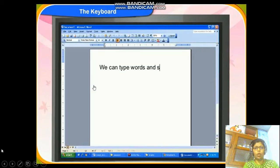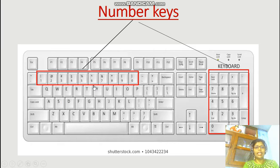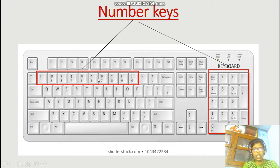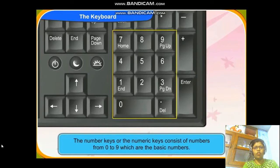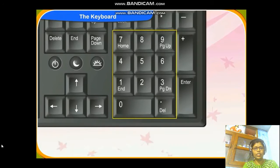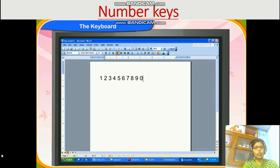We can type words and sentences through alphabet keys. The next type of key is number keys. Number keys have numbers on them. They are 10 in number, from 0 to 9. They are present above the alphabets and one set on the right side. We can type age, roll number, and other numbers through number keys. Number keys or numeric keys consist of numbers from 0 to 9 in sequence. They help us to write numbers.